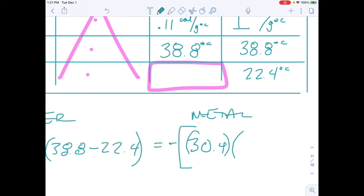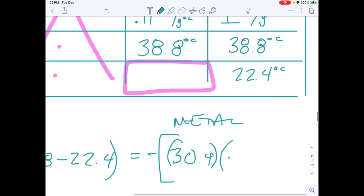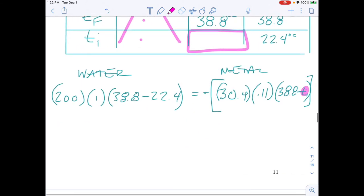We're calling it iron. So it's 0.11. Temperature final 38.8 minus temperature initial. And this is what we're solving for. If we can get that, we can figure out if that was the initial temperature of the metal. That means that's the temperature of the flame because the flame cooked it for long enough.